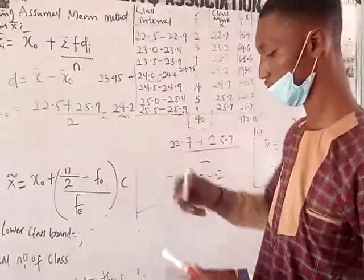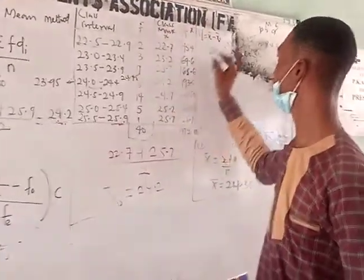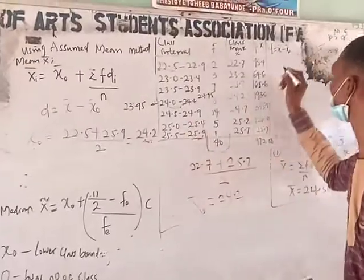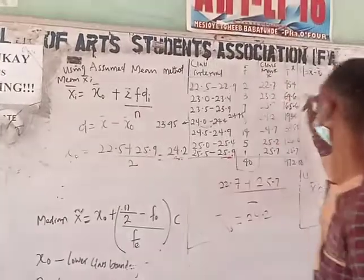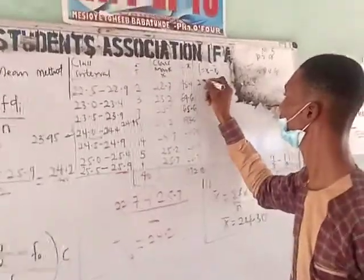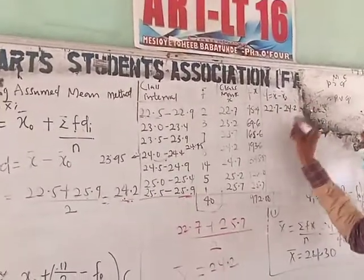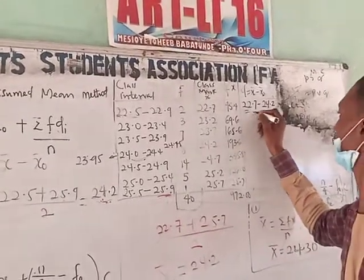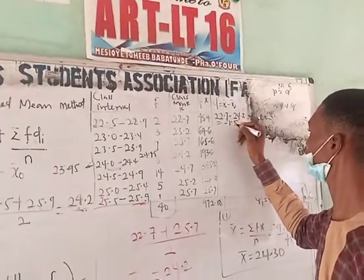Now your deviation is your class midpoint minus your assumed mean. So I have my assumed mean as 24.2. Therefore, my deviation — to find my FD — xp is now 22.7 minus 24.2. I will have an answer: calculate the value, minus 1.5. So you leave the answer to 1 decimal place — please don't forget that.